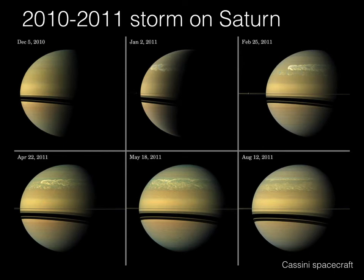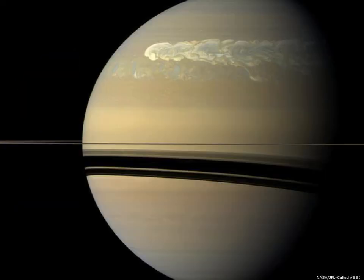Saturn is also capable of having storms, just not as often as we've seen on Jupiter. Take a look at this — this is a sequence of images made by the Cassini spacecraft in late 2010 and 2011, and a storm erupted that was carried by Saturn's very high-speed winds. It blew the storm debris all the way around the planet, wrapping itself around the planet. It was a really spectacular storm. These storms are probably not exceptionally rare, but they're certainly far less common than we typically see on Jupiter.